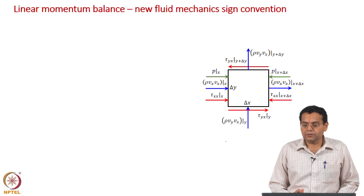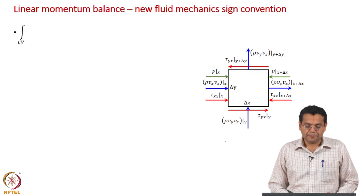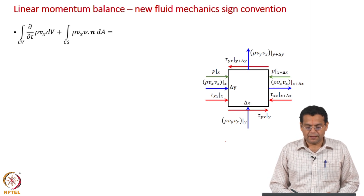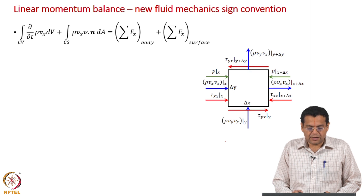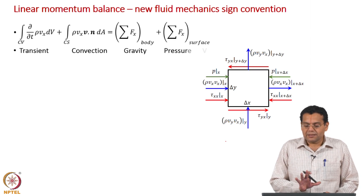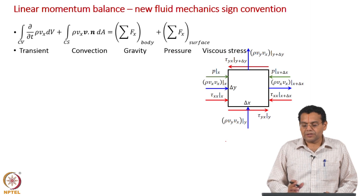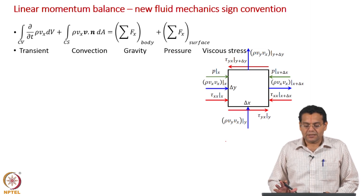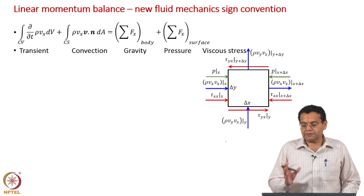Now we do the same derivation but using the new fluid mechanics sign convention. We write the integral linear momentum balance: the transient term and convection term on the left-hand side — no change conceptually, only sign convention is different. On the right-hand side we still have gravity and the surface forces, namely pressure and viscous stress. I am stressing this because in the next step, when we go to momentum transport convention, this equation is going to change.